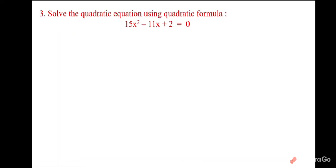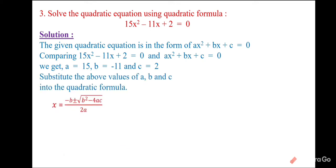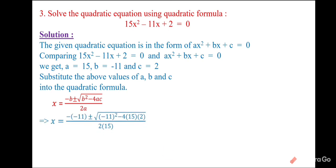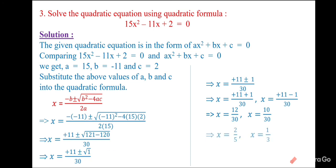One more problem: a = 15, b = −11, c = 2. Substituting: x = (11 ± √(121 − 120)) / 30 = (11 ± √1) / 30 = (11 ± 1) / 30. Positive: 12/30 = 2/5. Negative: 10/30 = 1/3. Therefore the solution is x = 2/5 and x = 1/3. The formula method is the easiest way to solve all quadratic equation problems.